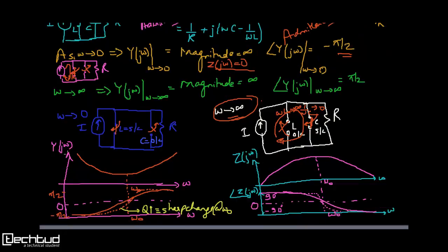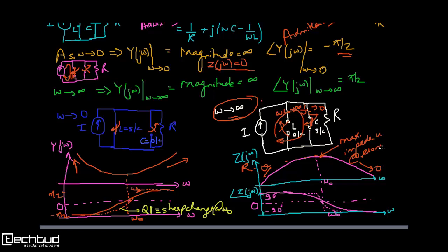Now you can see the plot of |Y(jω)|. When ω tends to infinity the magnitude goes to infinity, and when ω tends to 0 the magnitude also goes to infinity. For |Z(jω)|, it tends to 0 at both extremes. At resonance, the impedance is simply R — that is the maximum impedance you get at the resonant frequency.